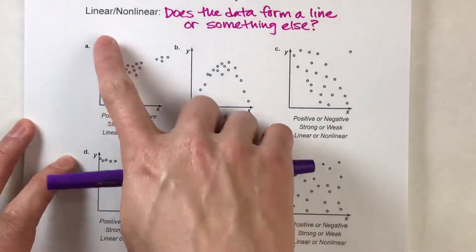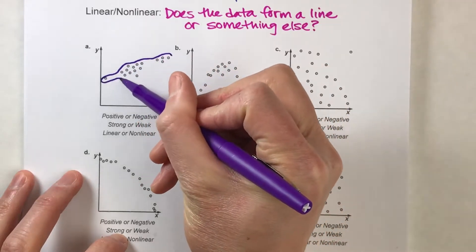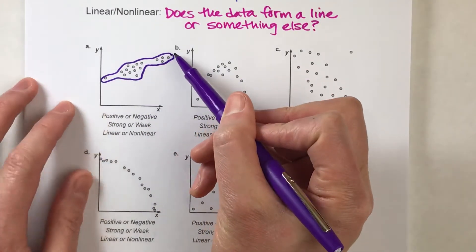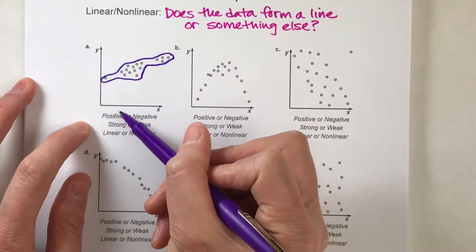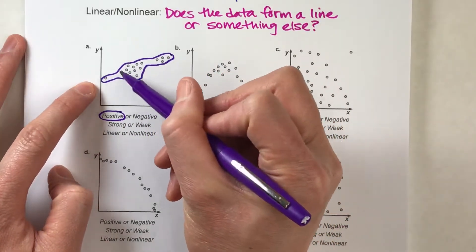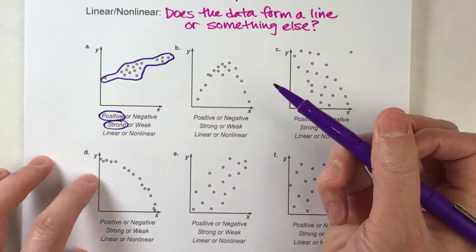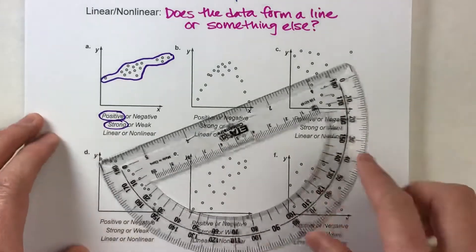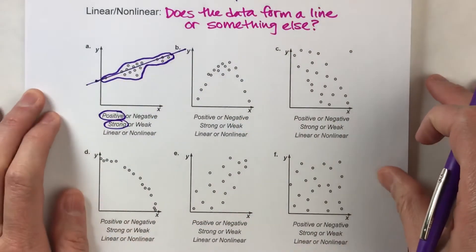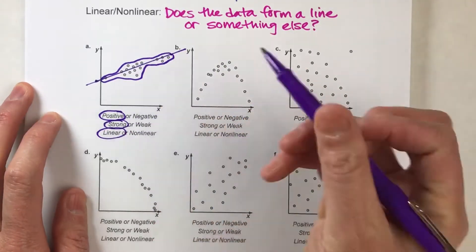Let's take a look at the first example. It always helps to put an outline around the data so you can see the basic shape. Notice it kind of follows this trend — see how it's moving up and to the right? So we know the data is increasing, which means it has a positive association. The data pretty tightly follows this pattern, so that's a fairly strong association. And if I use a straight edge, you can see the pattern follows a line, so we can say that is a linear association.